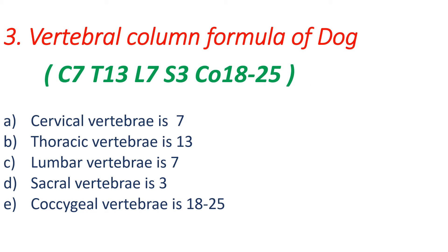Next is the vertebral formula of dog. As we know, dog is a mammal, so cervical vertebrae number will be 7, because in all mammals the cervical vertebrae number is 7. So dog's vertebral formula is: C7, T13, L7, S3, coccygeal 18 to 25. That means cervical vertebrae is 7, thoracic is 13, lumbar is 7, sacral is 3, and coccygeal vertebrae vary from 18 to 25.